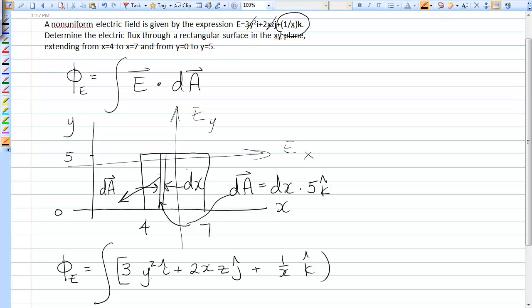Okay, and then we dot that with 5 dx k-hat. That's the area vector.